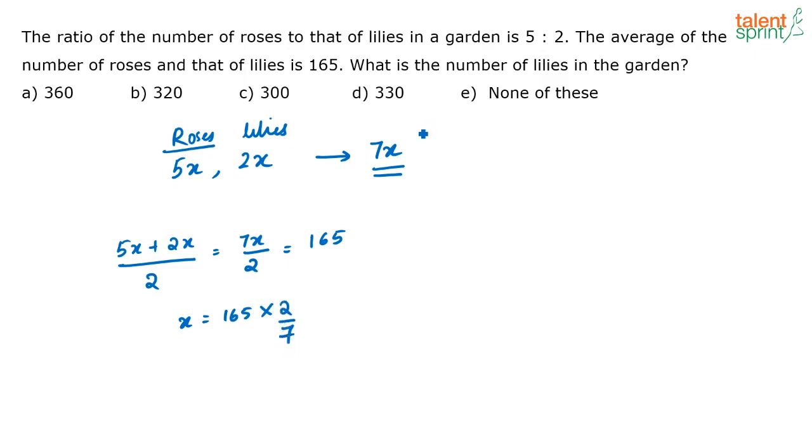Now the question is how many lilies are there in the garden? Number of lilies is equal to 165 into 2 into 2 by 7. Correct? Because there are 2 by 7, there are 2x lilies there in the garden. So this will be your answer.